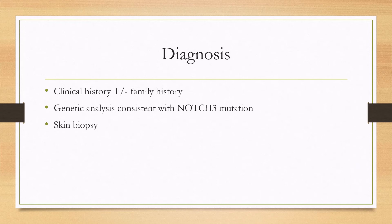In terms of diagnosis, it's based on clinical history — often including a family history — and once you suspect the diagnosis and do imaging, you can confirm it with genetic analysis consistent with a NOTCH3 mutation. If suspicion is high but genetic analysis is negative, a skin biopsy will show characteristic findings on pathology and electron microscopy that can lead to the diagnosis.